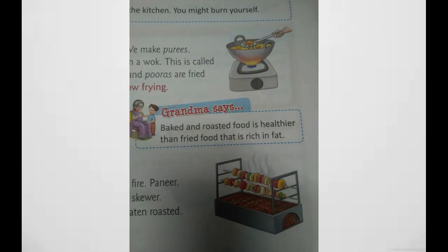In frying, food is cooked in hot oil or ghee. We make puris, samosas, pakoras, and finger chips by frying in a wok. This is called deep frying and it requires a lot of oil.